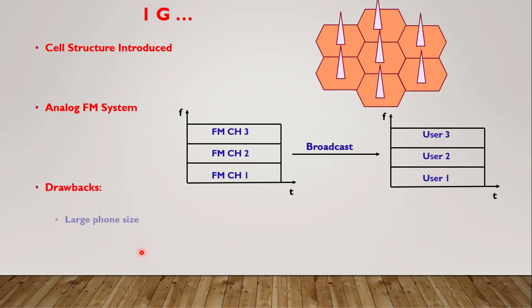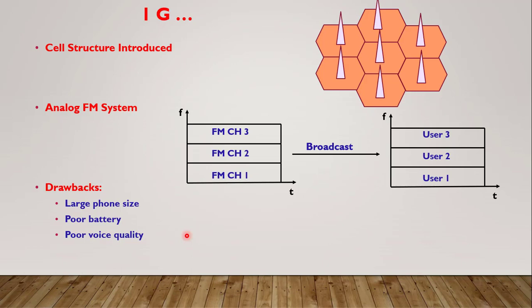The drawbacks of the first generation system include: large phone size — the phone was the size of a brick, hence called a car phone; very poor battery performance; poor voice quality due to a lot of noise that is difficult to cancel in analog systems; no security since it was completely analog with no CDMA techniques; and expensive service fees, which is why very few people could adopt it.